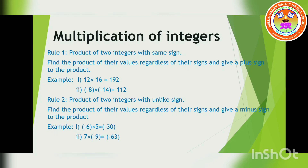Next: 7 into minus 9. So 7 nines are 63, and there is a minus symbol — so it is unlike symbols. Therefore, your answer should also have a minus symbol. Understood, children? Both rules 1 and 2. Yes.